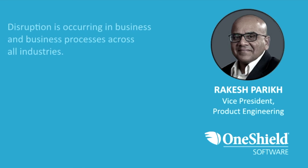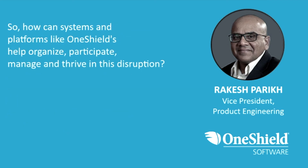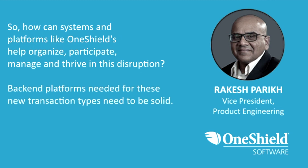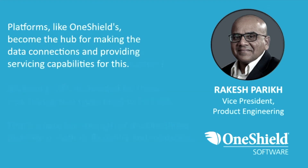We all understand the disruption that's occurring in business and business processes across industries. At some level, insurance is just catching up, particularly when it comes to servicing the customer and understanding the customer journey. The question is, how can systems and platforms like OneShield help organize, participate, manage, and thrive in this disruption? It is important to realize the backend platforms that are needed for supporting these new transaction types need to be solid. That's where the strength of the OneShield platform is, with its flexibility and robustness, becoming the hub for making data connections and providing servicing capabilities.